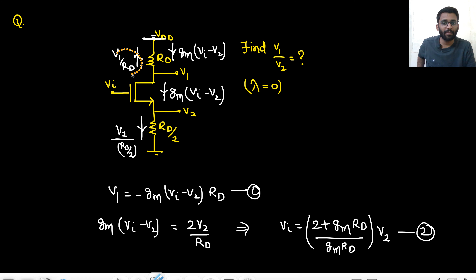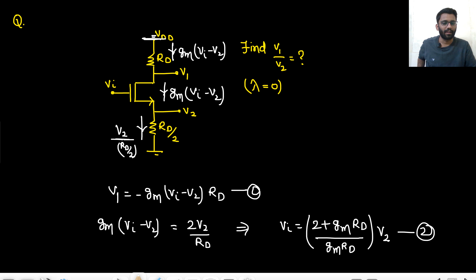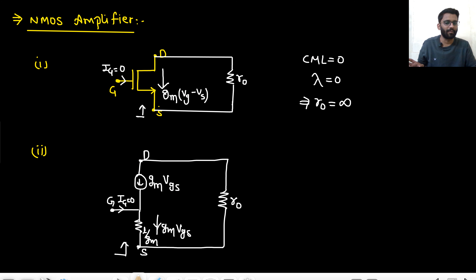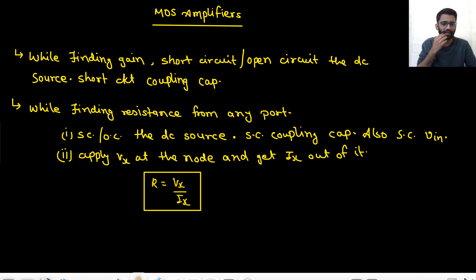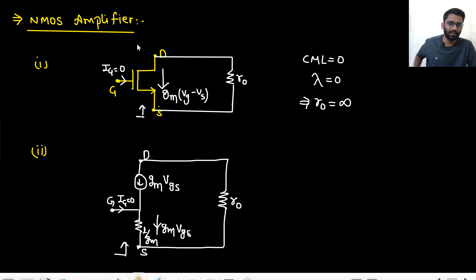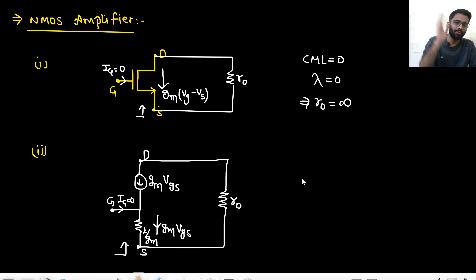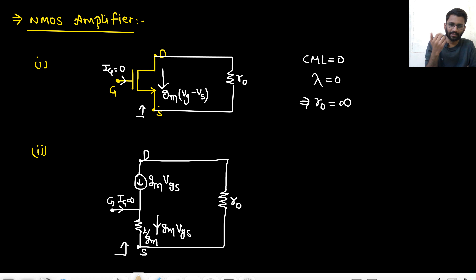Always play by currents — current and resistance. The maximum you need to remember: gmVgs current is there, R0 is there, and from source you see 1/gm to gate and R0 to drain. That's it. This is the method for solving small signal analysis problems. gm × (this potential minus this potential) gives the current, R0 is there, and from source you see 1/gm to gate and R0 to drain.